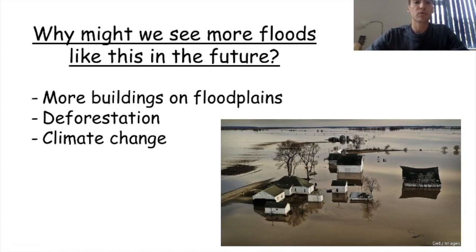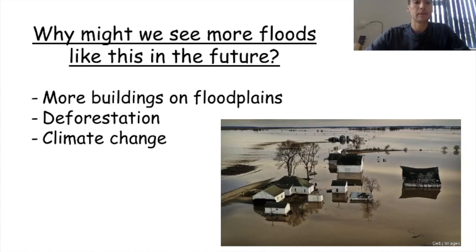Why might we see more floods like this in the future? There are three main reasons. First, more buildings on floodplains — linked back to last lesson, if we build more buildings there will be more impermeable surfaces, so there's more chance of flooding happening. Second, deforestation: if we remove more trees, water is more likely to get to the river quicker and cause more flooding.